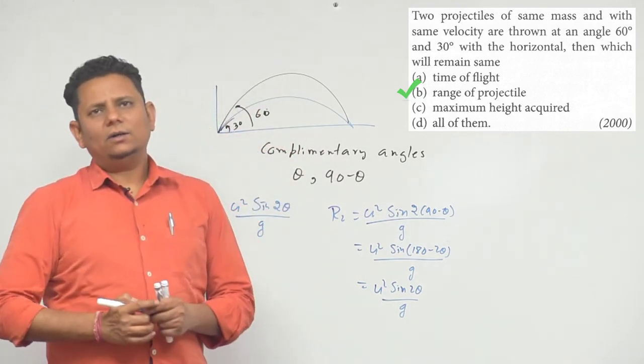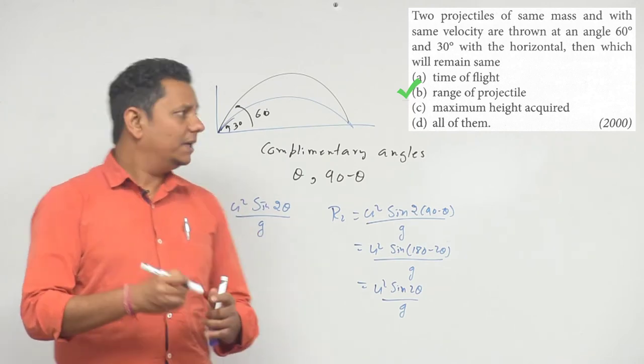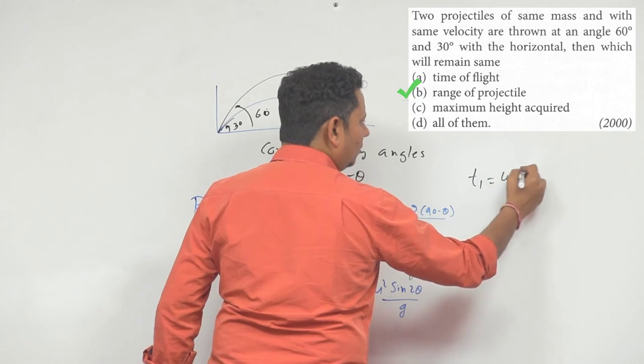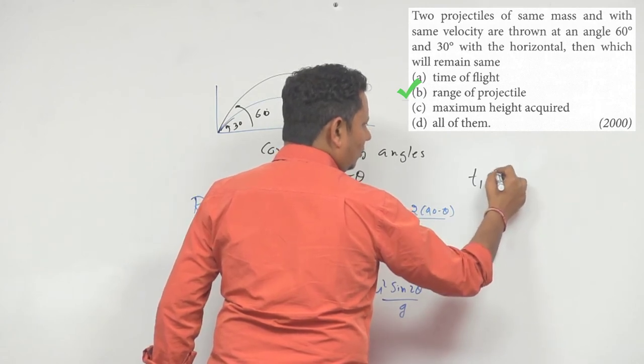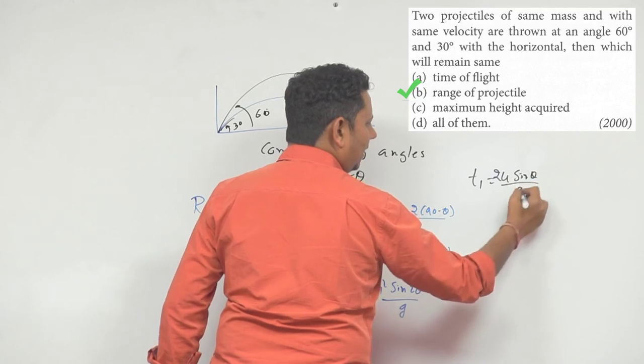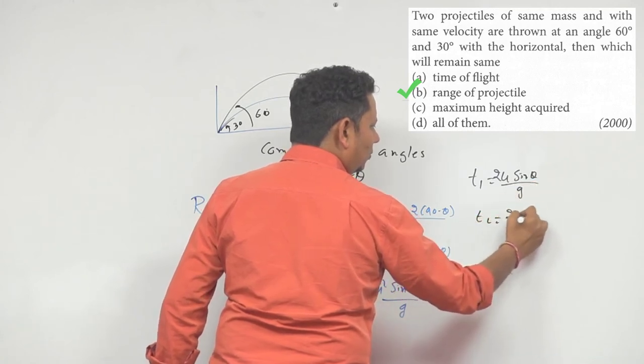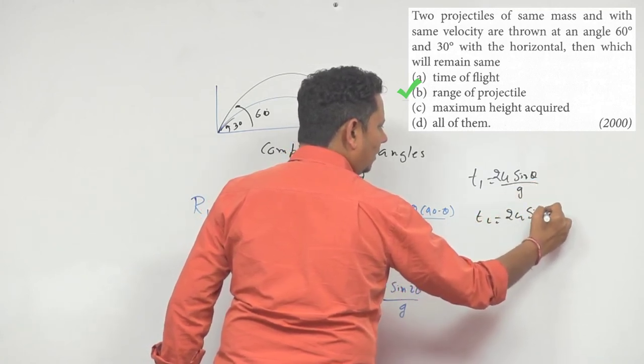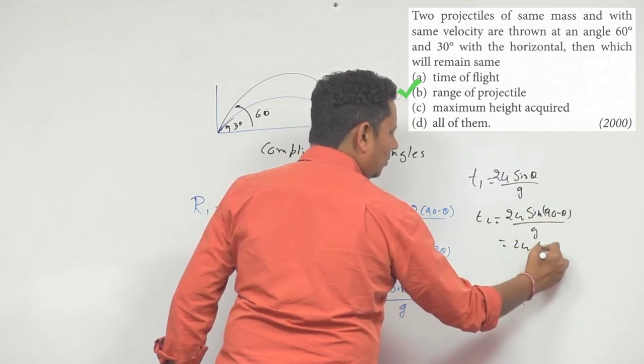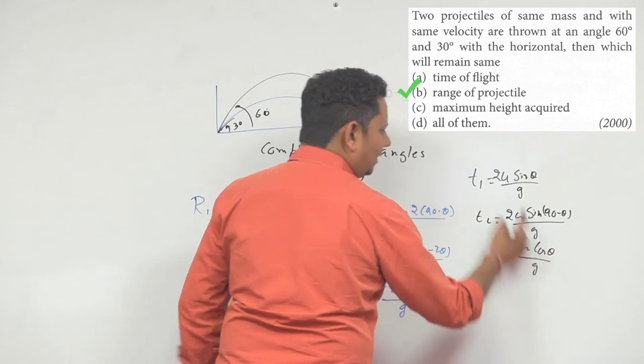Time is different and maximum height is different. Time t1 will be equal to 2u sine theta divided by g. t2 will be equal to 2u sine of 90 minus theta divided by g, and this will be 2u cos theta divided by g.